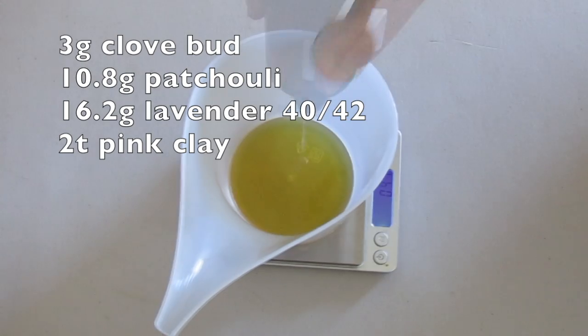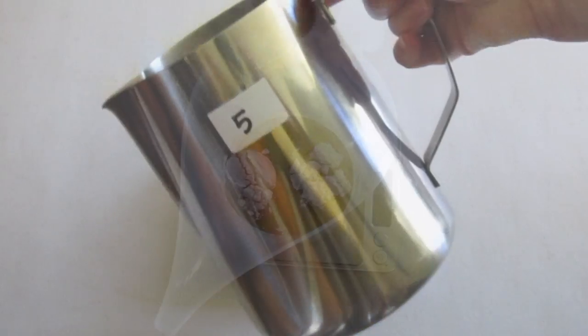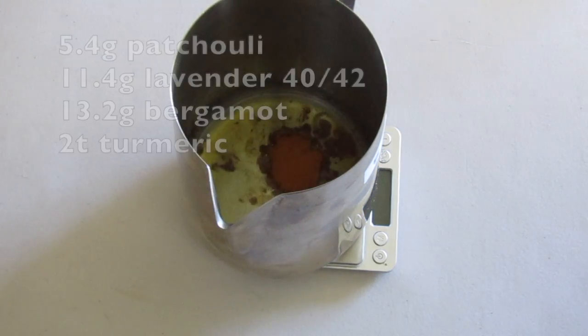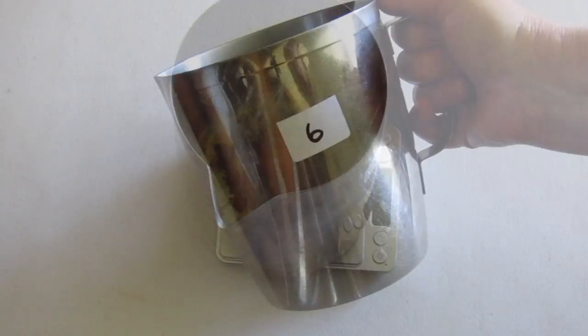I wasn't sure what the lather would be like just using tallow or how quickly it would trace, so for this first foray I'm dividing the batter into seven single-color batches.